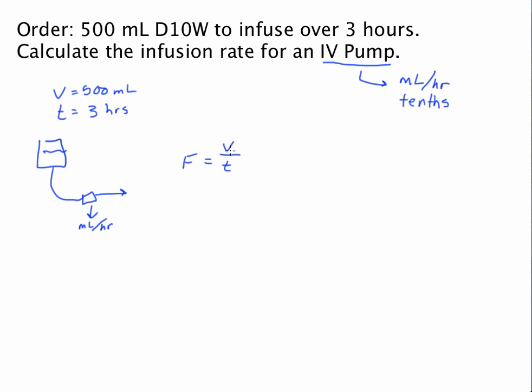Now, this should make sense. We need to take that volume, in this case 500 milliliters, and split that amongst the 3 hours. So, if I had 500 milliliters, I'm splitting that into 3 equal pieces to tell me how many milliliters per every 1 hour.